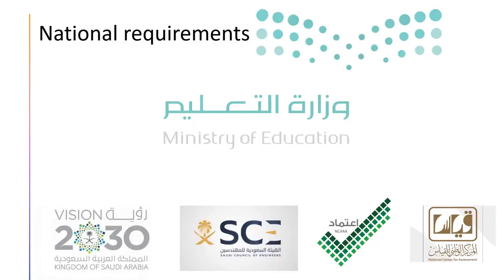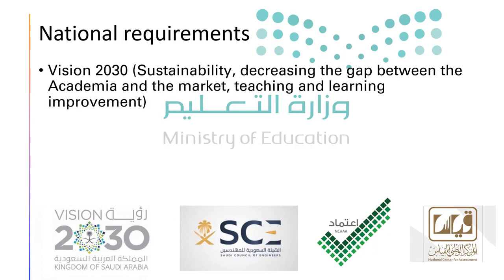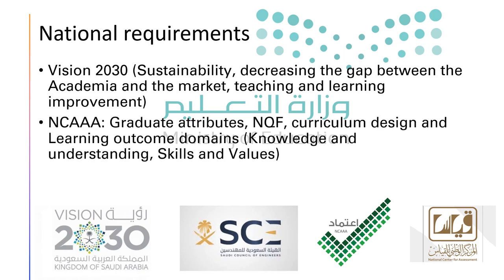Regarding national requirements, we have Vision 2030. You have to look at some vision aspects, for example, sustainability, decreasing the gap between the academy and the market by increasing practical issues in your curriculum, and also teaching and learning improvement. You also have to follow the NCAA requirements or standards.